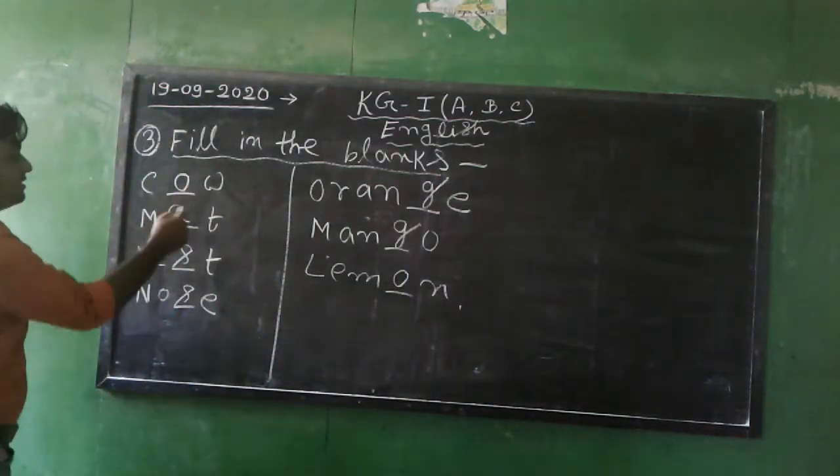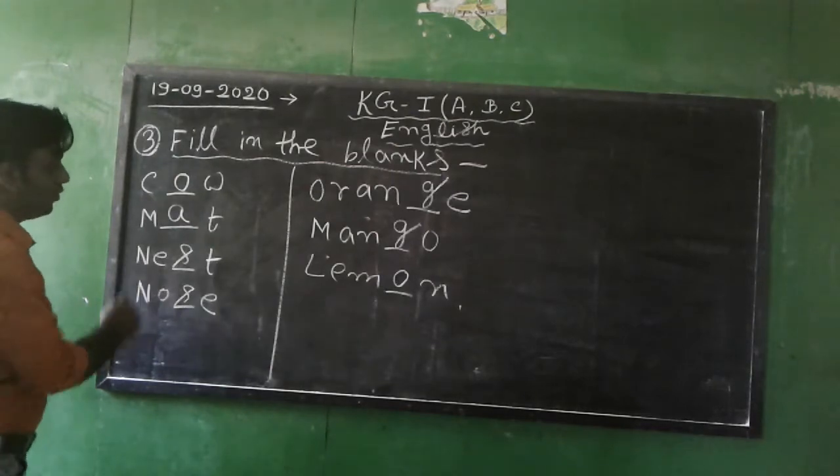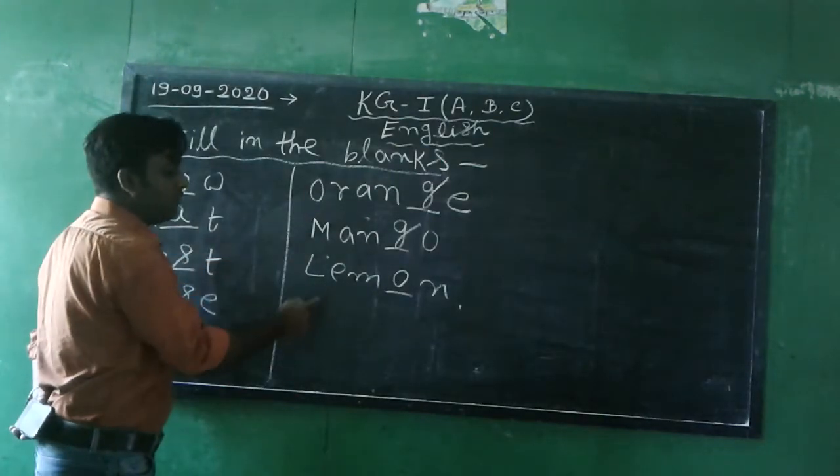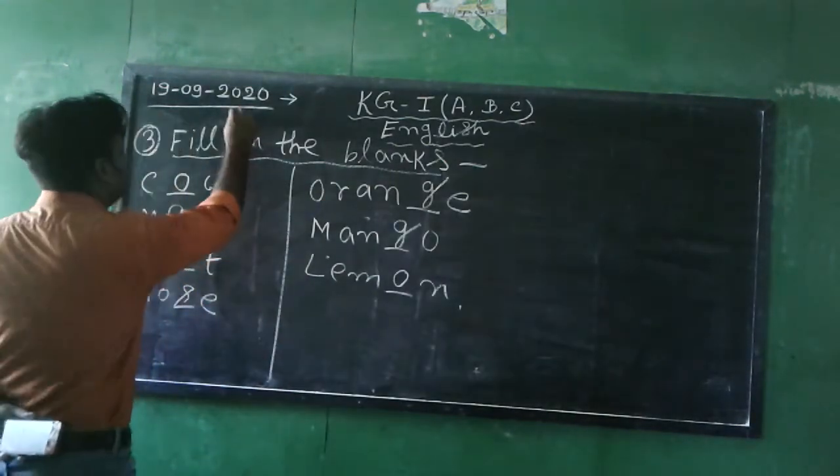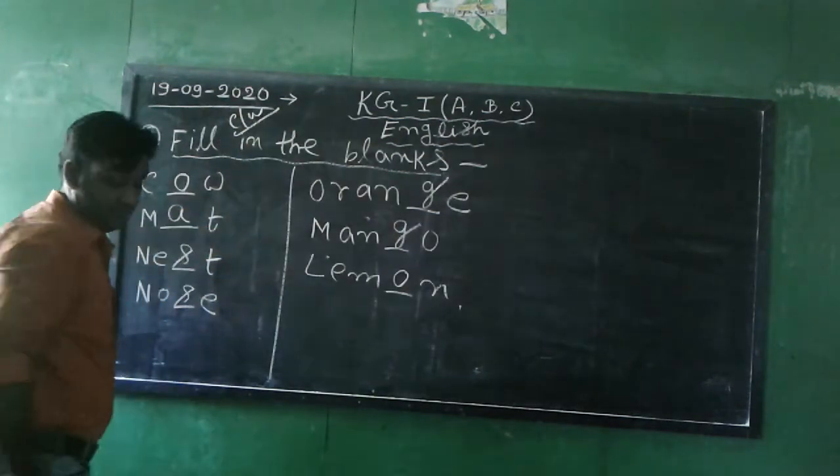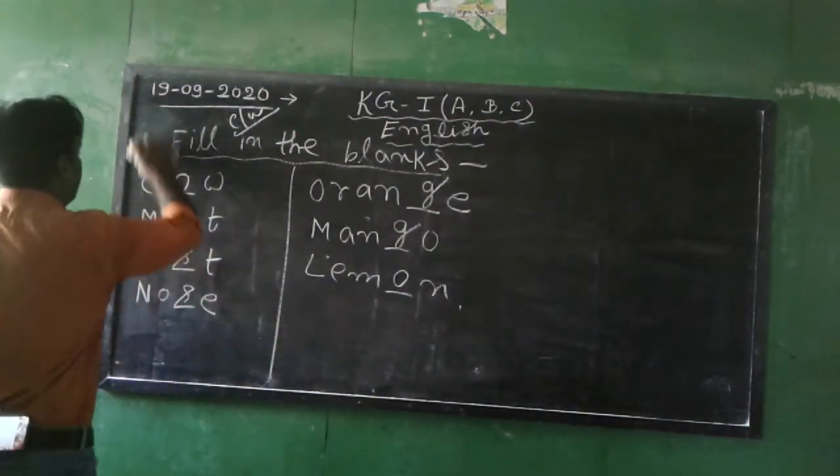So fill in the blanks: COW, MAT, NEST, NOSE, ORANGE, MANGO, LEMON. This is our classwork. And next, our homework is